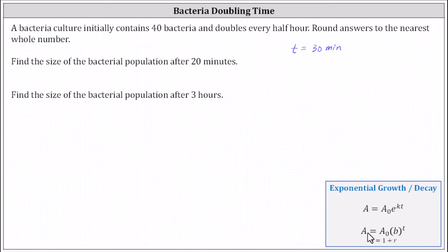In this example, we'll be using the equation with base e, meaning the equation a equals a sub zero times e to the power of kt, where a sub zero is the initial amount, a is the amount after time t, k is the continuous growth rate, and t is time — in our case, in minutes.